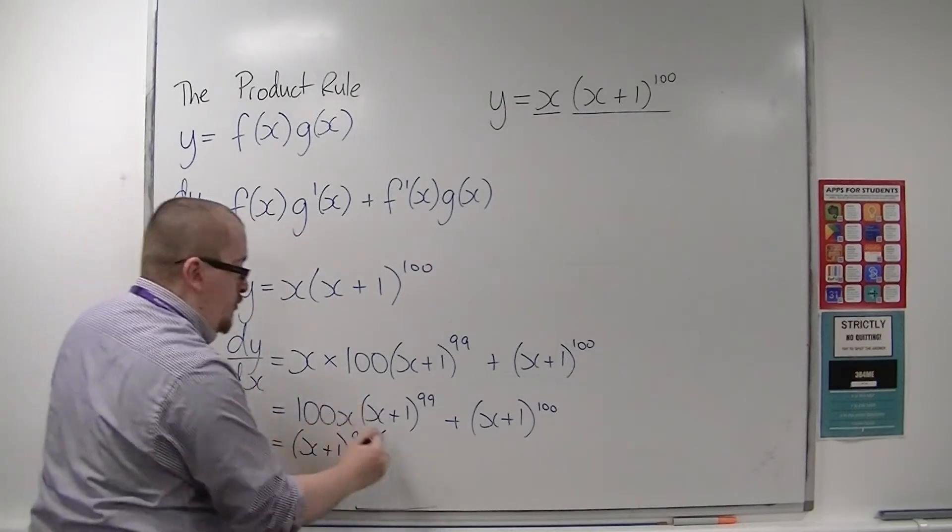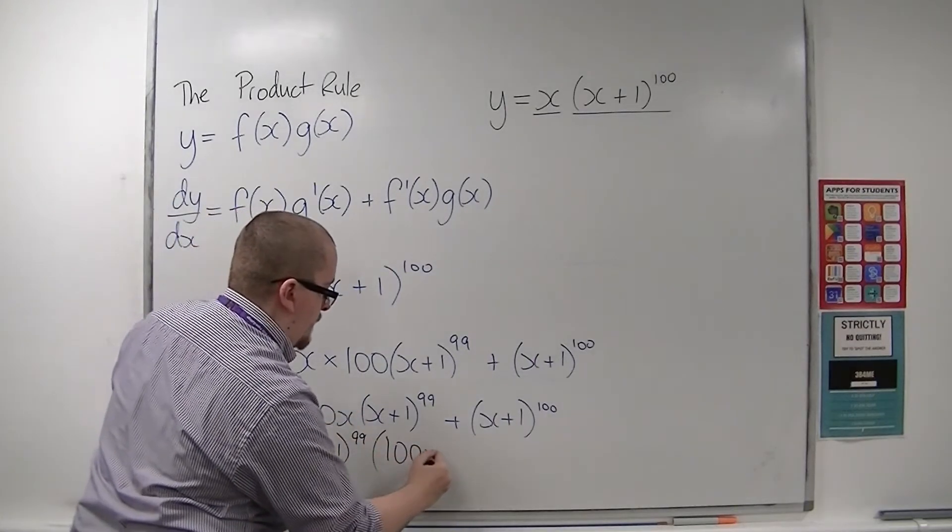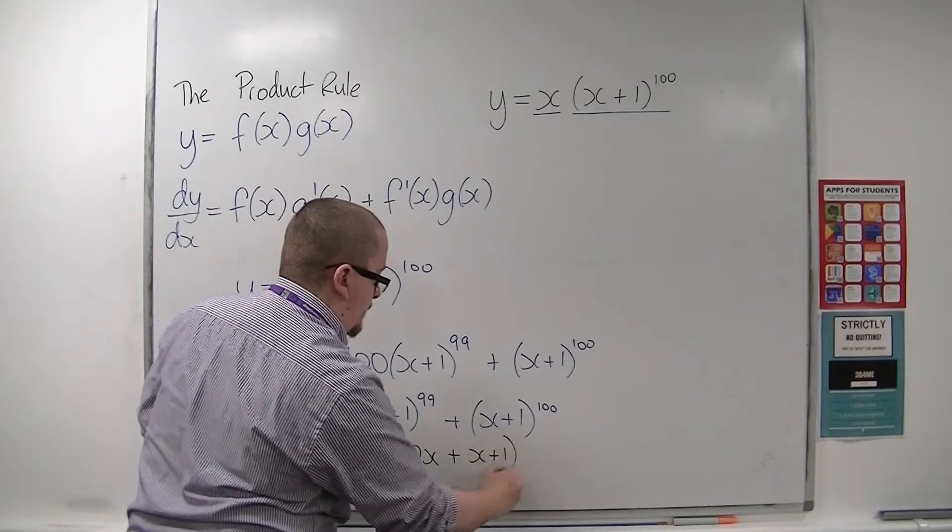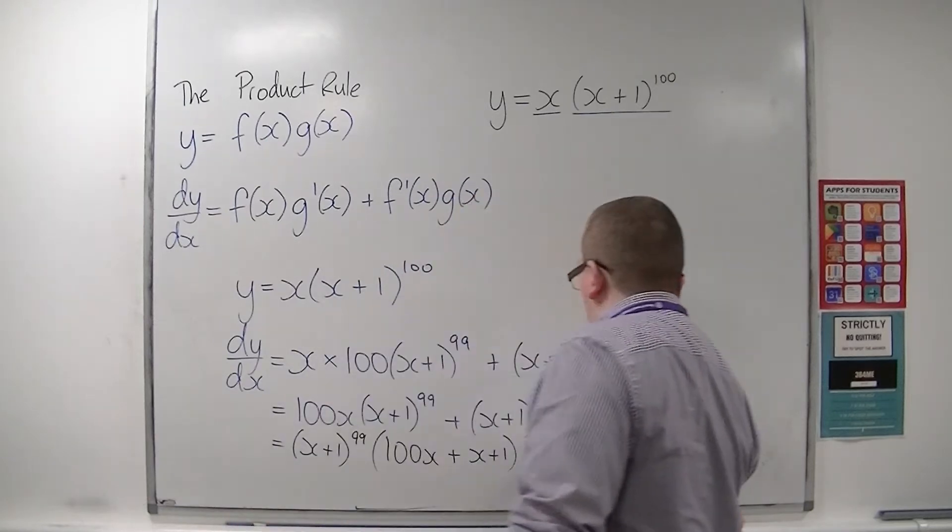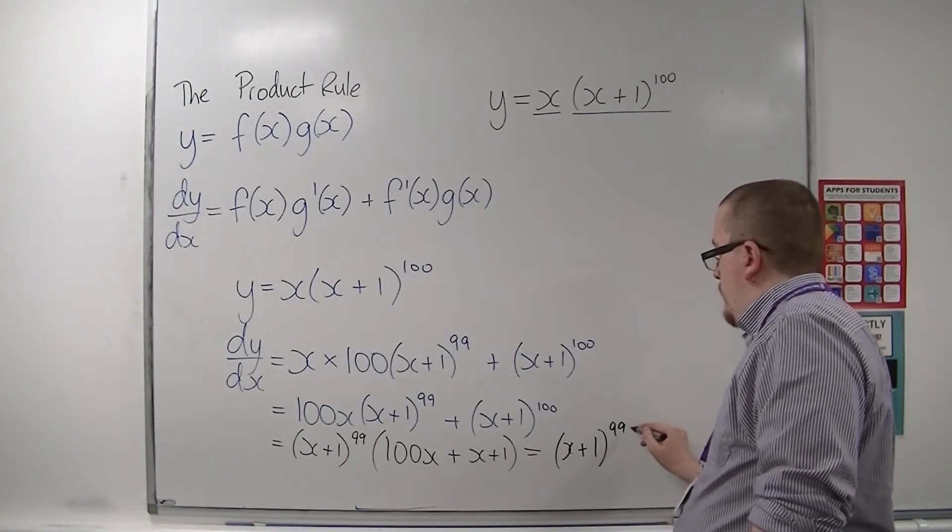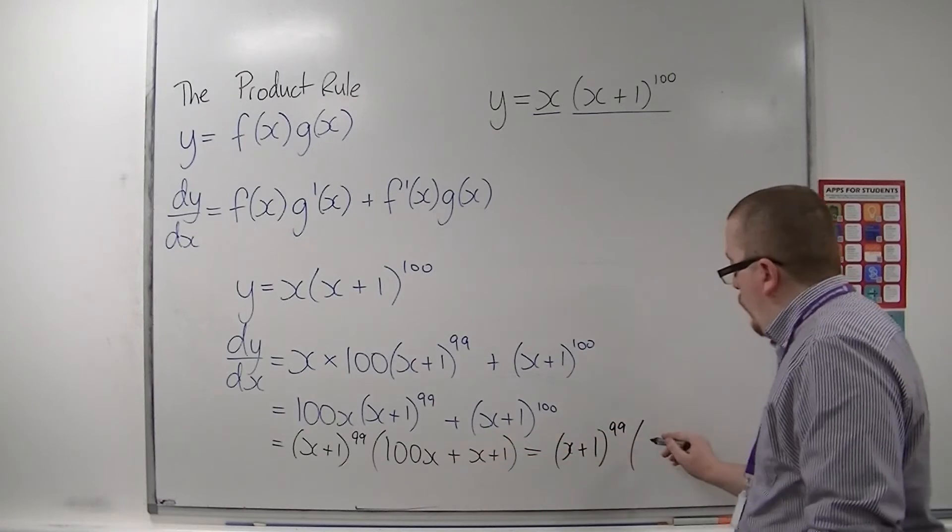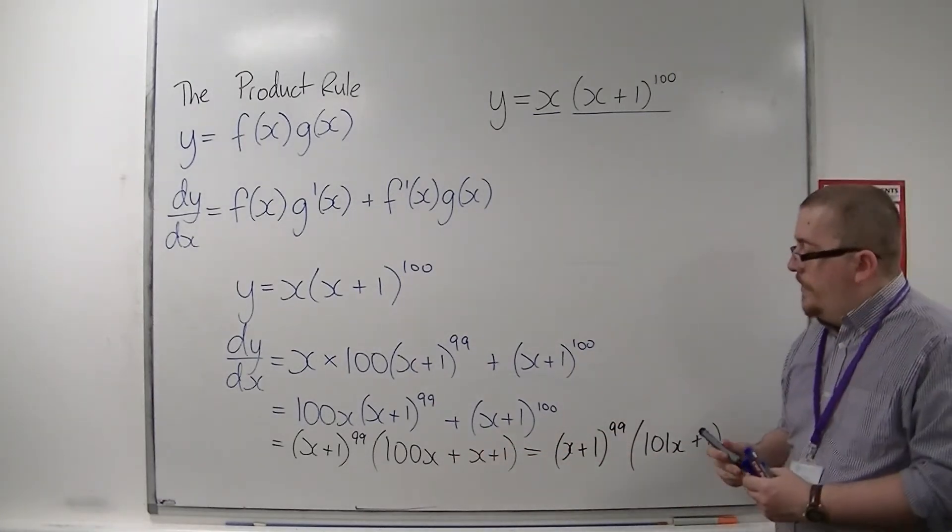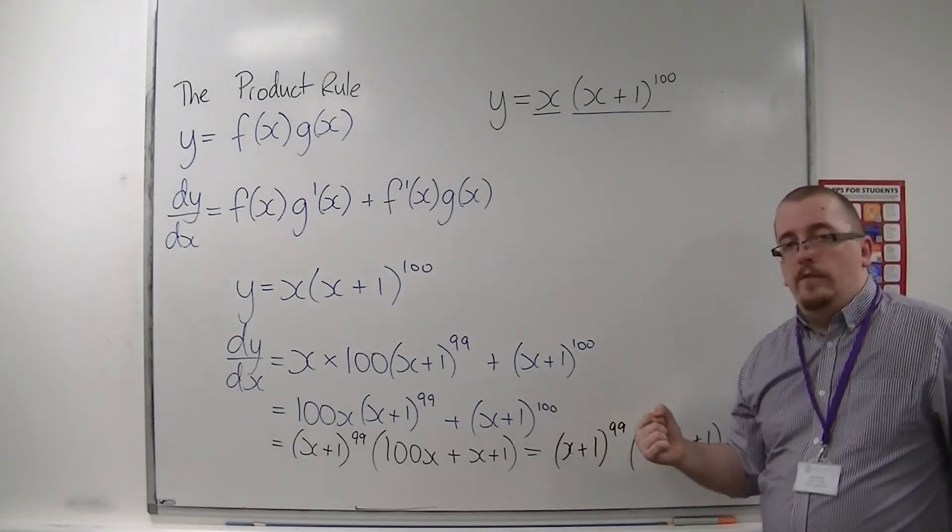And then we'd have 100x left over there. We've got an extra x plus 1 over there. And so this is x plus 1 to the 99 times 101x plus 1. And that is the factorised version of that.